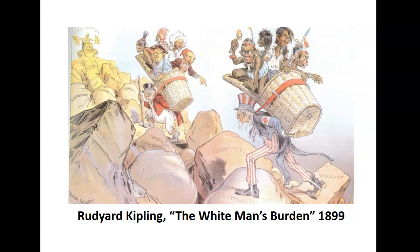The context for the poem The White Man's Burden was Rudyard Kipling encouraging the United States to play a greater role in the non-European world, specifically the Philippines, which the United States had just taken over from Spain as a result of the Spanish-American War. The White Man's Burden, illustrated here in this cartoon, tells us a great deal about the mindset behind colonialism. You can see here John Bull, the traditional symbol for Great Britain, and Uncle Sam, both carrying on their backs non-European, non-white peoples.